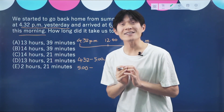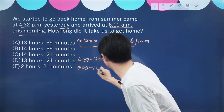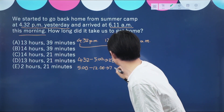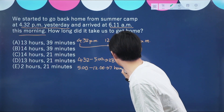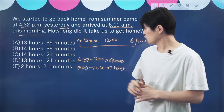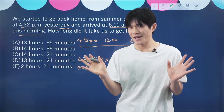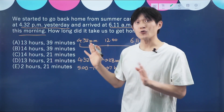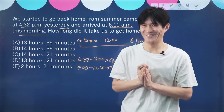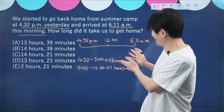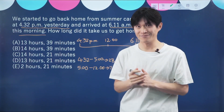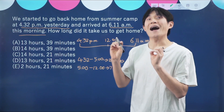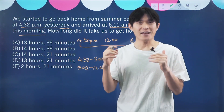It's 7 hours. So we know that it took 7 hours and 28 minutes from 4:32 p.m. to midnight. Now today — 6:11 a.m. It's pretty easy, right? 6 hours and 11 minutes.